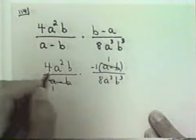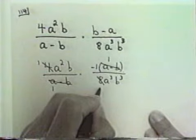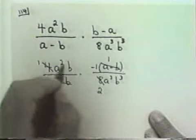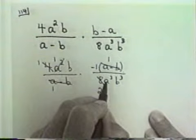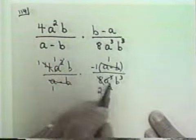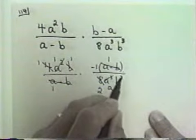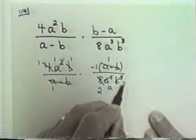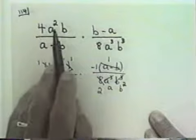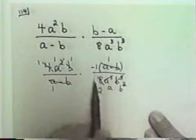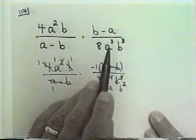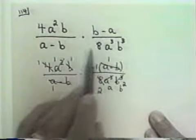4 will go into 4 one time; 4 goes into 8 two times. I can also divide both numerator and denominator by a squared: a squared divided by a squared is 1, and a cubed divided by a squared is a. Now I can divide by b: b divided by b is 1, and b cubed divided by b is b squared. The reason I can do this with 4a squared b and 8a cubed b cubed is that they're already factored — it's 4 times a squared times b, and 8 times a cubed times b cubed. There's no addition or subtraction; it's strictly multiplication.